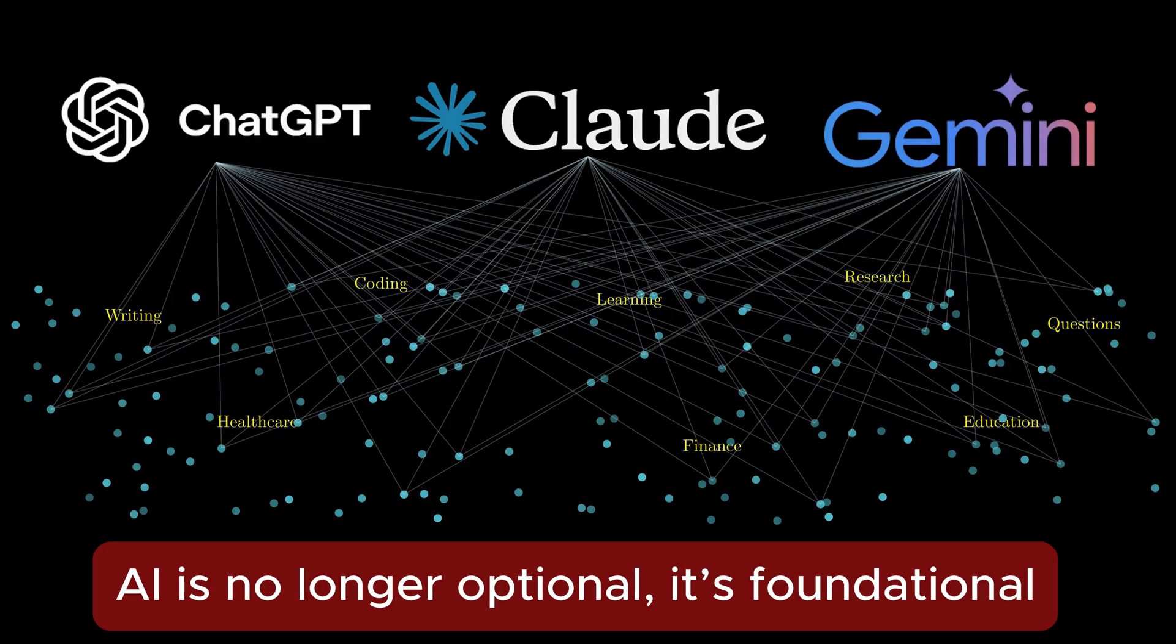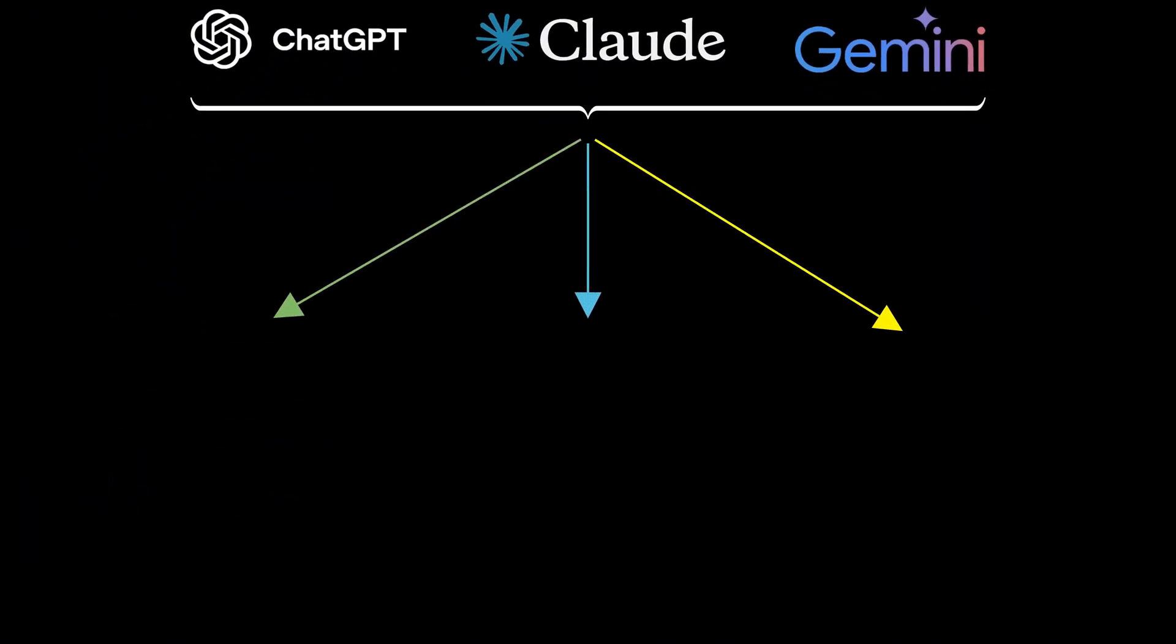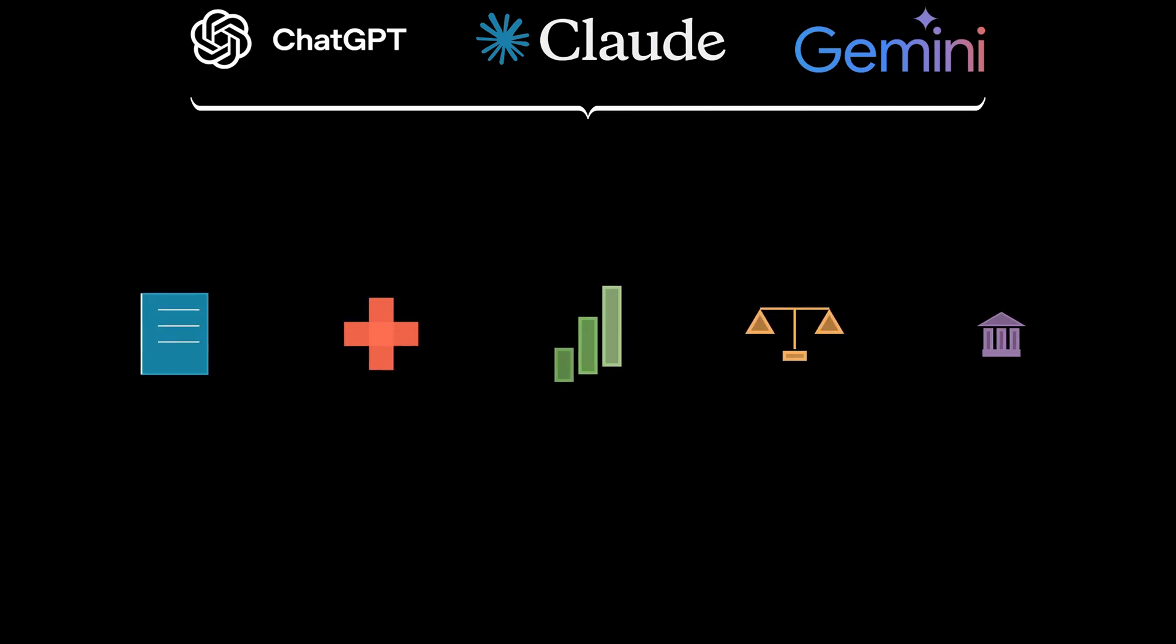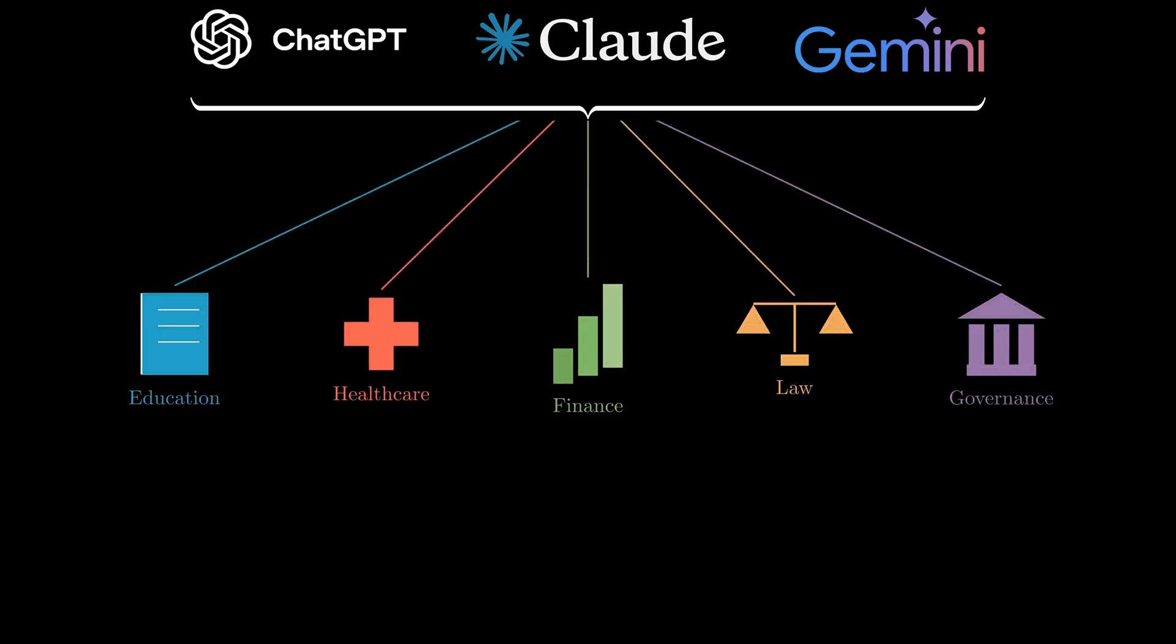They are embedded in everyday life, assisting millions of people on a daily basis. As these systems increasingly mediate human productivity and communication, their reliability, robustness, and transparency are no longer abstract academic concerns. They are practical necessities with direct societal impact.